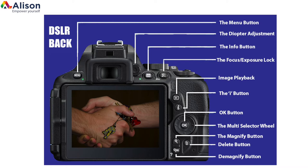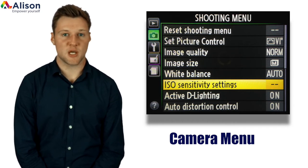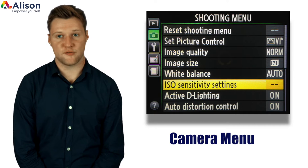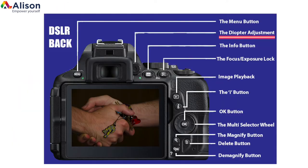Playback can be looking at photography or it can be watching video that you have shot. As always, let's start at the top. The menu button will bring up the camera's menu. Here we can change the image quality, picture ratio, our autofocus settings, and plenty of other options. Our diopter adjustment lets us focus our viewfinder.